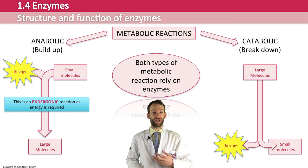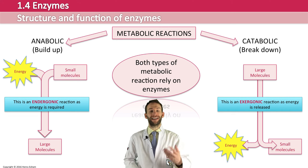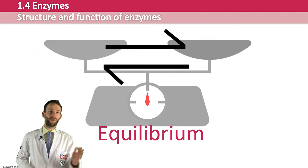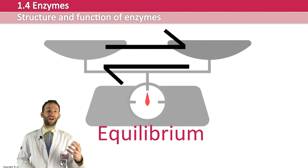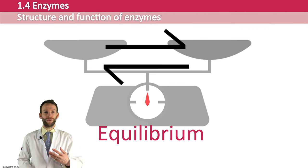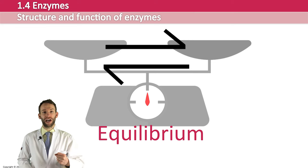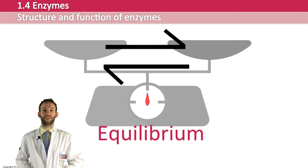Metabolic reactions that happen inside cells are reversible — they can go forwards or backwards. In a test tube they'd actually reach a state of equilibrium and balance out. But that doesn't happen in cells because you're either adding new reactants all the time or removing products, meaning the reaction will always keep going in a certain direction.